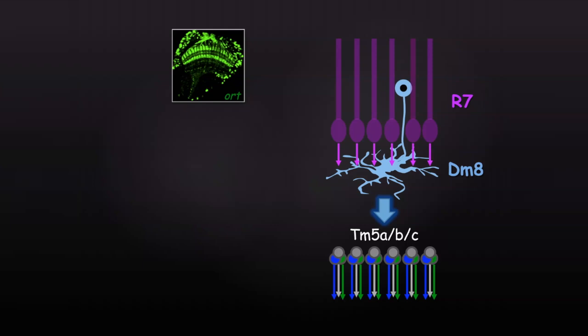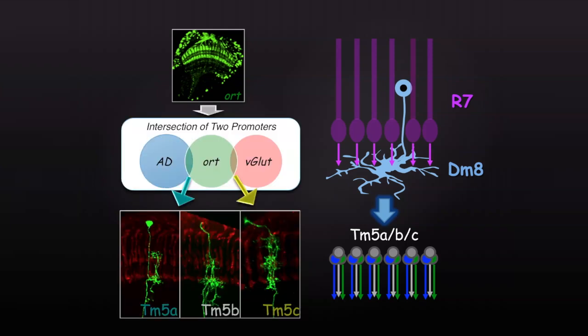In this example, we combined two promoters to generate specific drivers for three TM5 subtypes and express tetanus toxin to block their synaptic transmission.